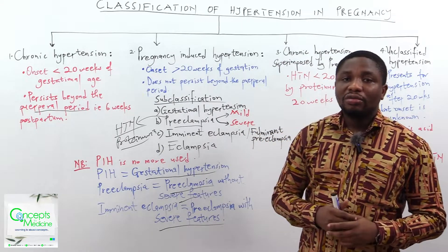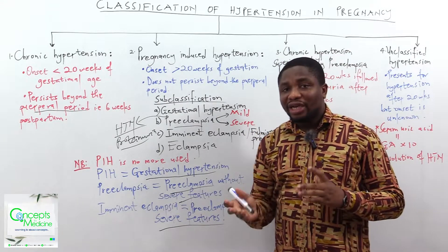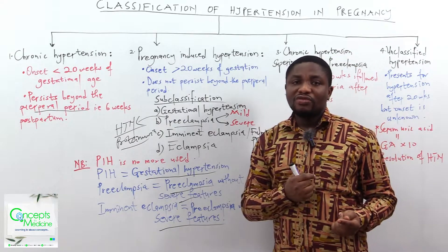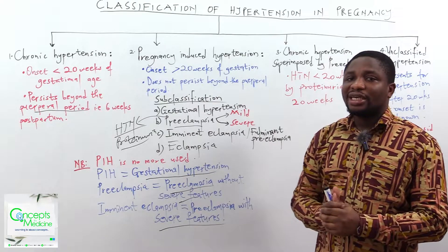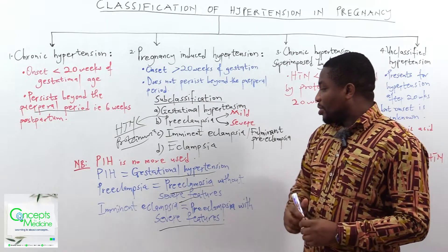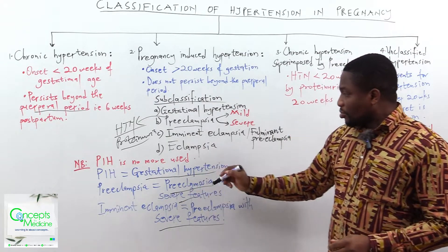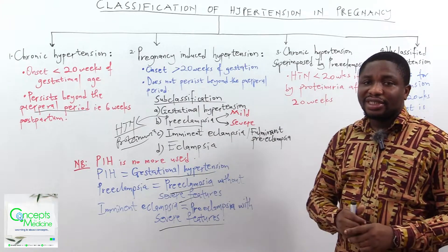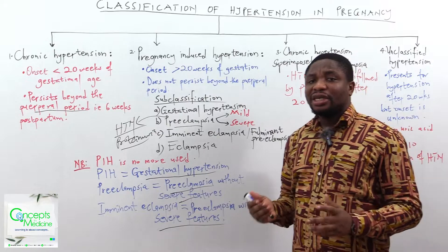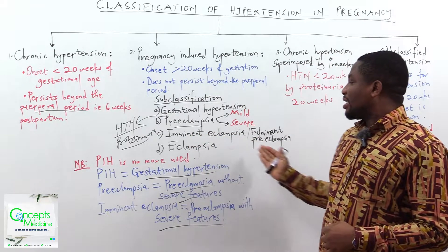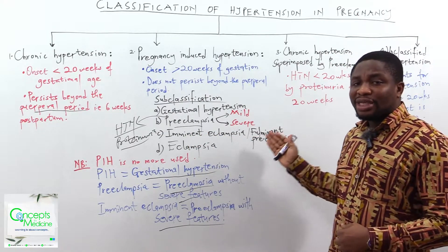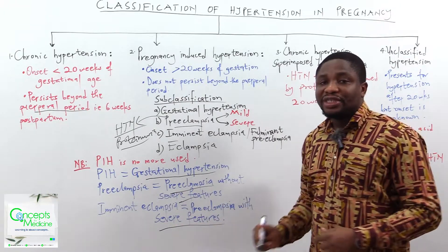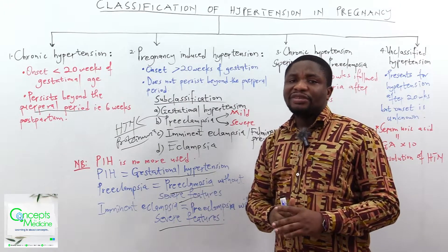That is what we call preeclampsia. Preeclampsia is a progressive disease — it moves forward and does not move back. Currently, the new nomenclature is preeclampsia without severe features, meaning there will not be severe features. And if you are looking at imminent eclampsia or fulminant preeclampsia, which is now referred to as preeclampsia with severe features, it means there will be severe features present.